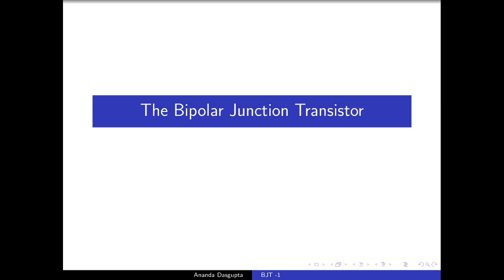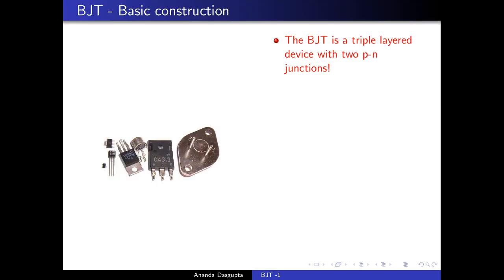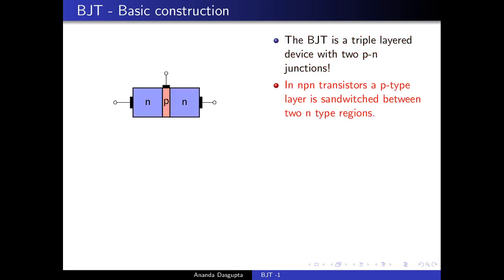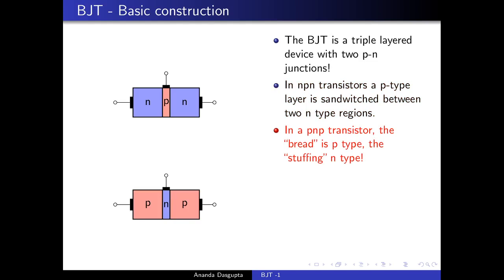The BJT is called bipolar basically because the conduction in a BJT actually occurs both through electrons and holes — both polarities are involved. It is a triple-layer device with two PN junctions. In an NPN transistor, there is a P-type layer sandwiched between two N-type regions. In a PNP transistor, the thing is reversed — the two outer pieces are P-type semiconductors and the middle region is N-type. These are the two basic kinds of transistors in use.